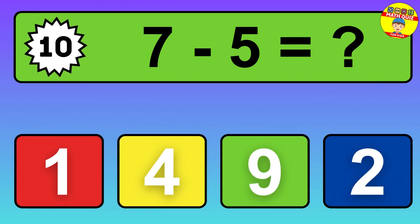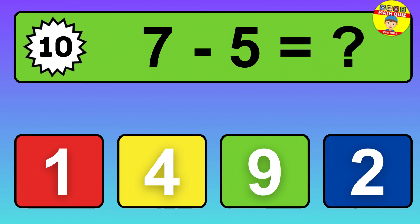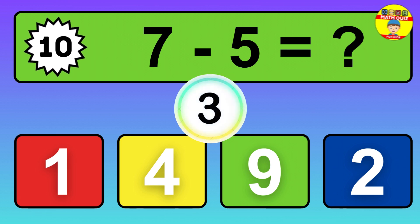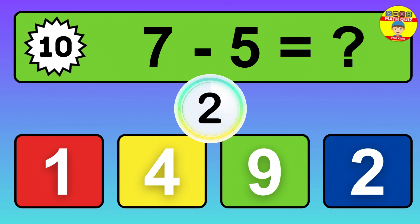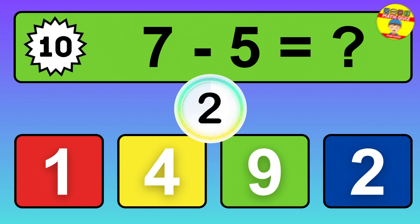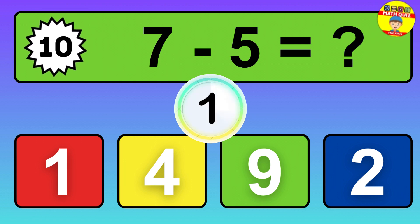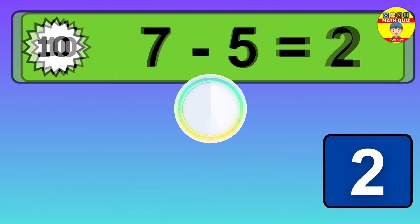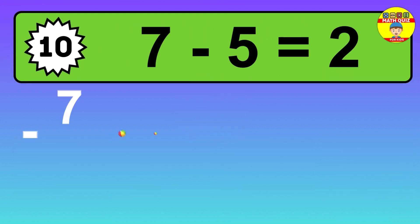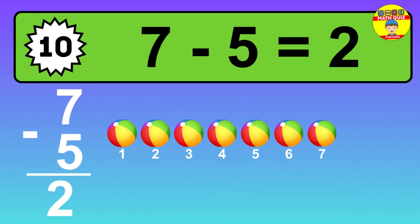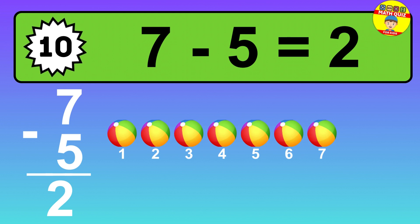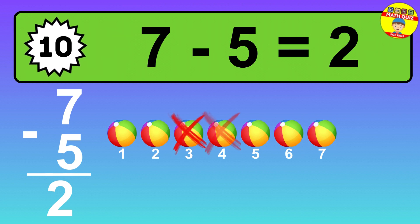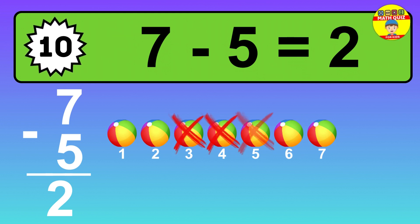Question 10. 7 minus 5 equals what? So the answer is 7 minus 5 is 2. Let's count it.